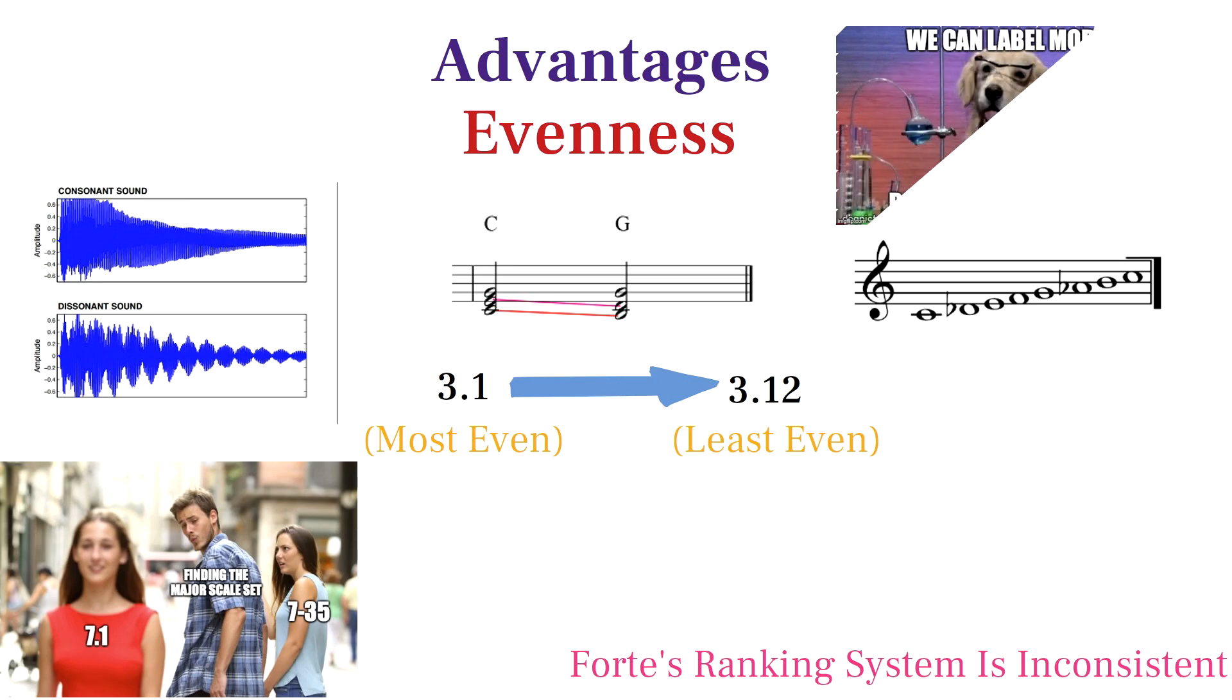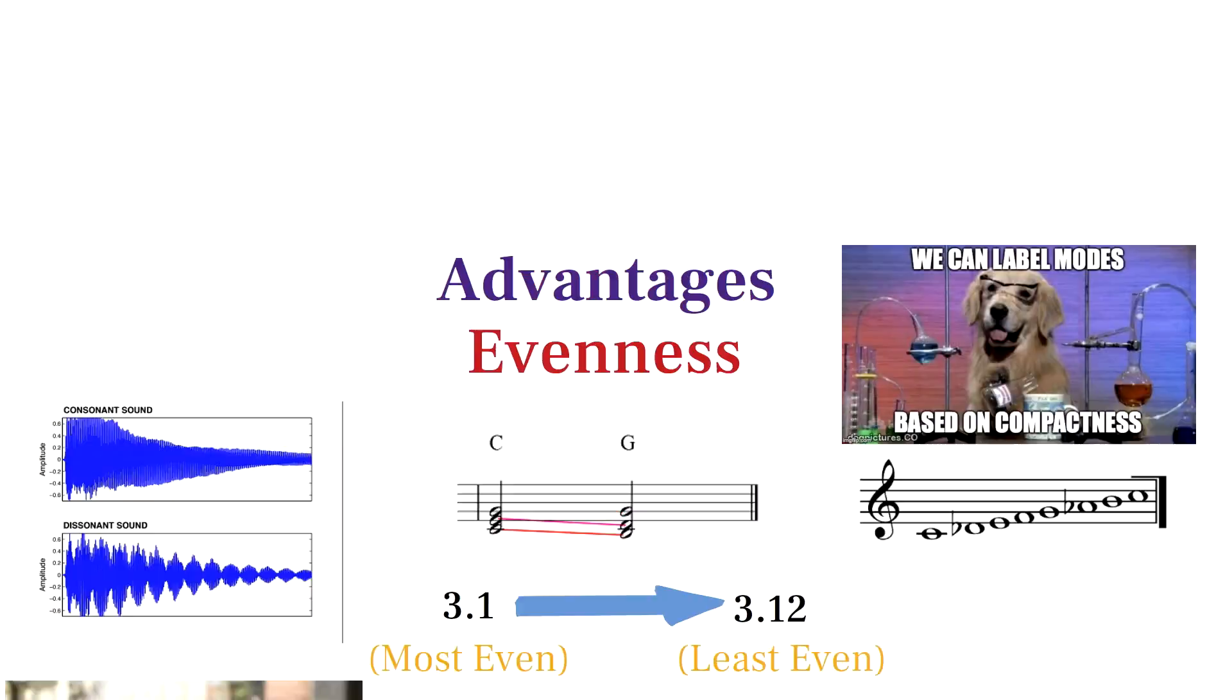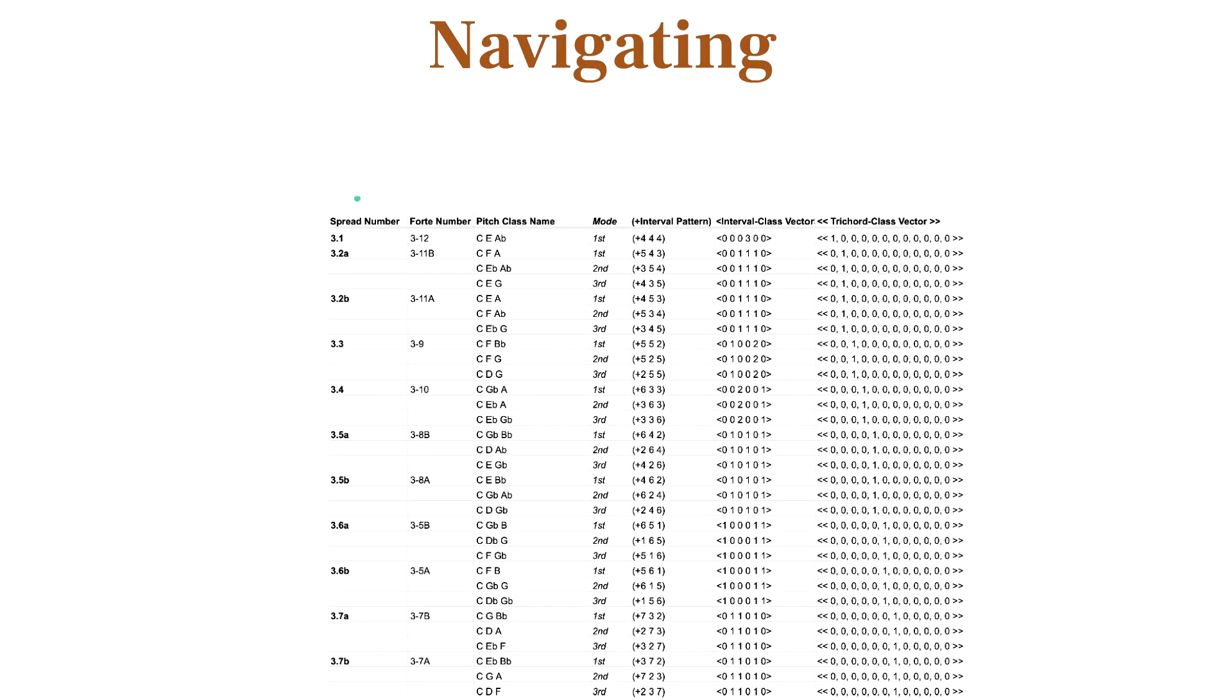Ranking modes according to compactness gives us an objective way to order modes and label them. Taking a look at the set chart of modes, we see the spread number which begins with a cardinal number separated with a decimal instead of a dash, and then the rank number which is based on evenness. Then we have the Forte number equivalent for each spread number for translation purposes.